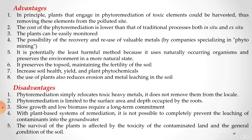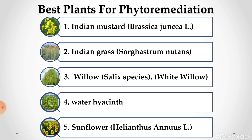Disadvantages of phytoremediation: it simply relocates toxic heavy metals rather than removing them completely. It is limited to the surface area and depth occupied by the roots. Slow growth and low biomass require a long-term commitment. With plant-based remediation, it is not possible to completely prevent leaching of contaminants into groundwater. The survival of plants is affected by toxicity of the contaminated land and soil conditions. Plants that can be used include Indian mustard, Indian grass, Willow tree, water hyacinth and sunflower.